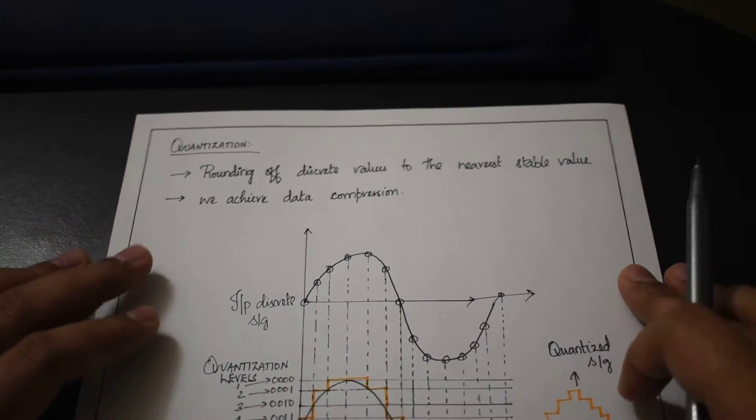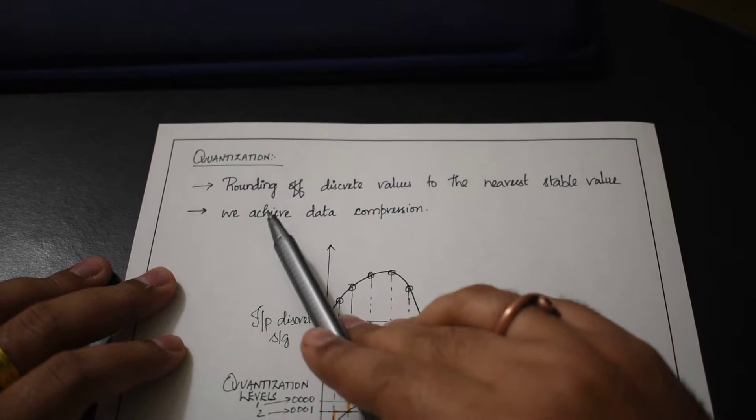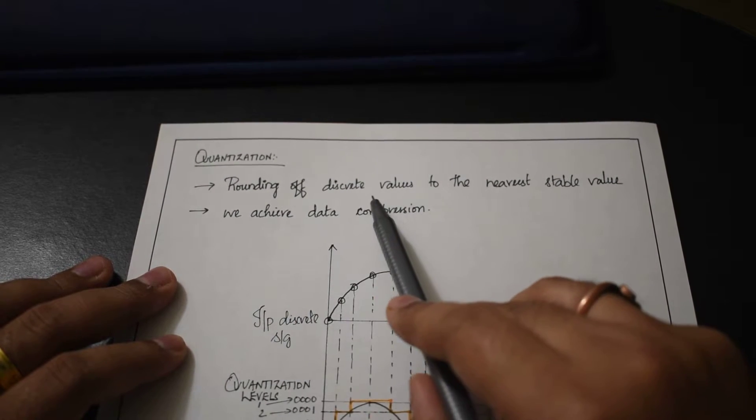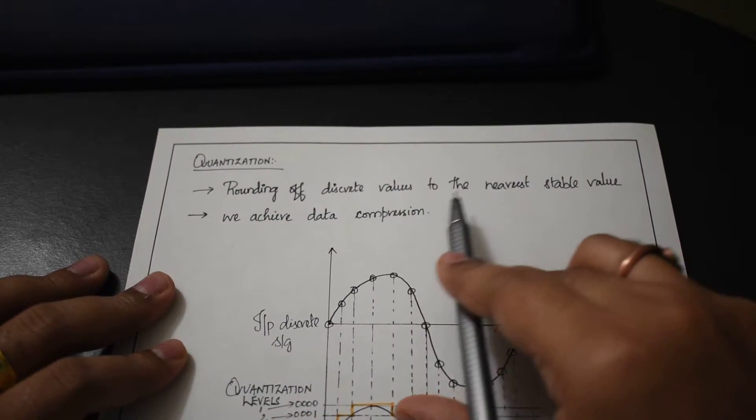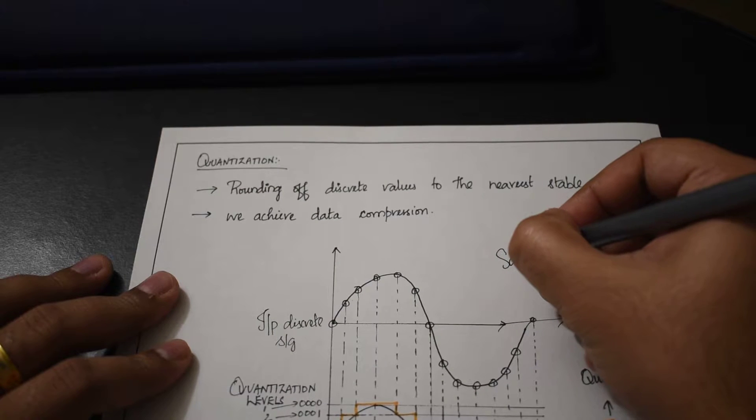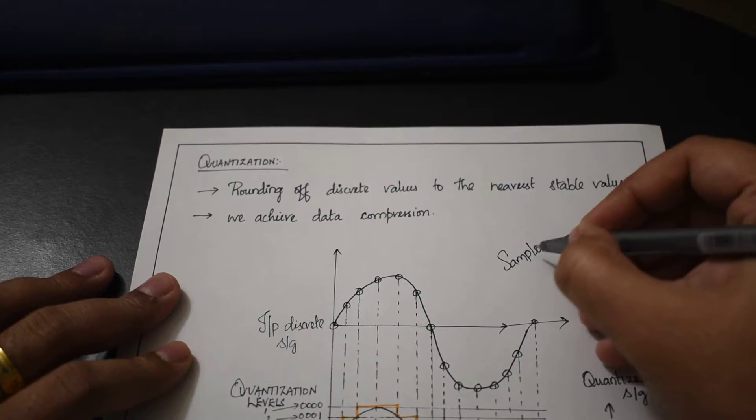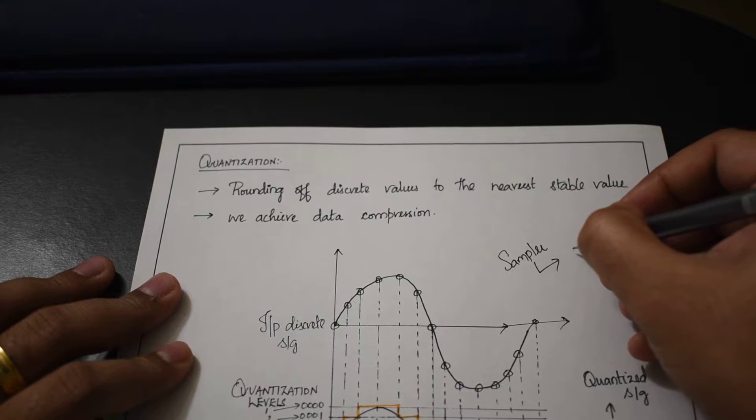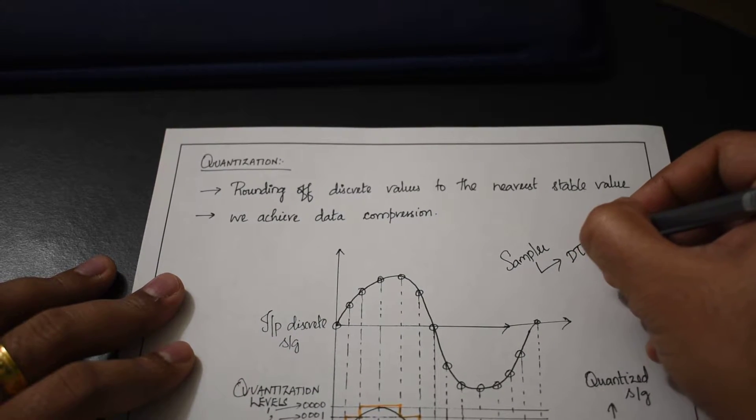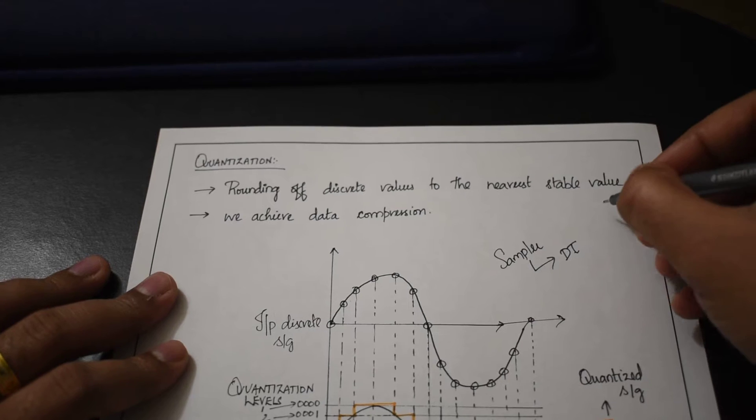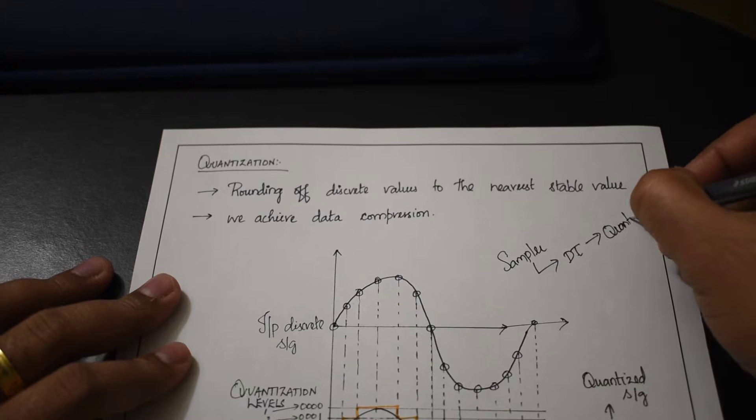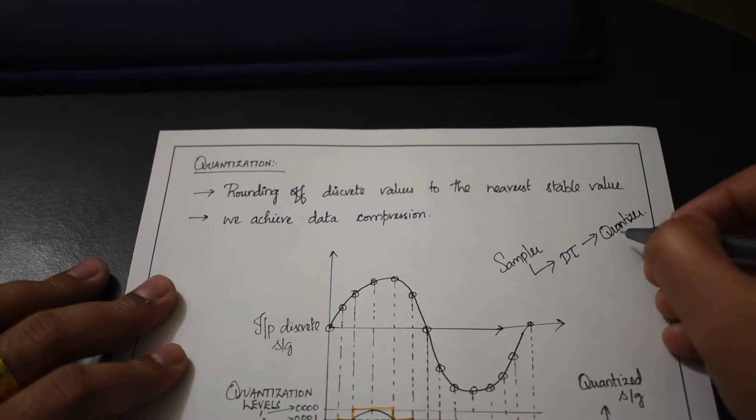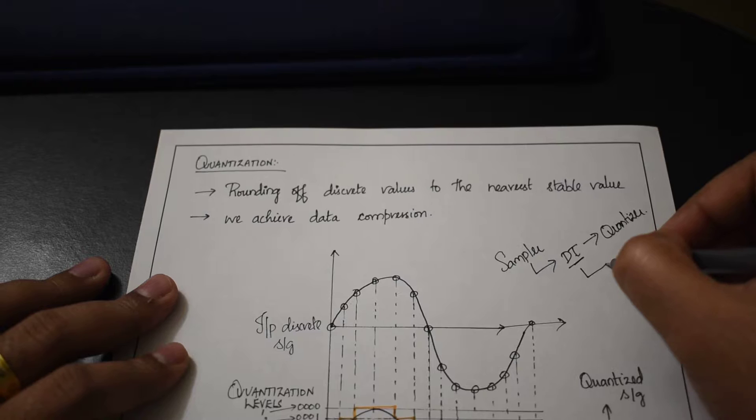What does quantization mean? Quantization means rounding off discrete values to the nearest stable value. Remember, the quantizer gets input from the sampler. In the last video, we found that the sampler converts continuous time signals into discrete time signals. These discrete time signals are given as input to the quantizer, which takes the discrete signals and maps them to the nearest stable value.